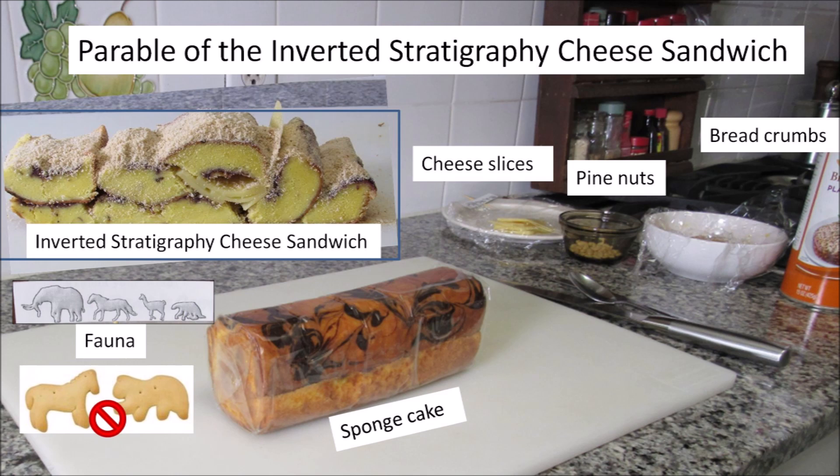I was going to stand the animal crackers to represent live animals, and knock them over to represent fossils. Instead, the fossils are represented by pine nuts. Slices of cheese represent the layer of ground at the time of an impact.